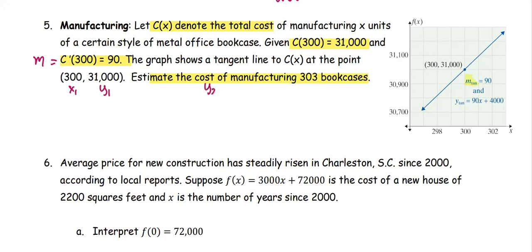We are looking at y₂ for the cost at 303 bookcases, and 303 is the x₂. From the slope formula, m = (y₂ - y₁)/(x₂ - x₁). We replace the numbers.